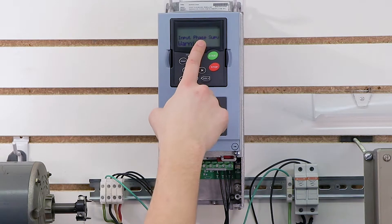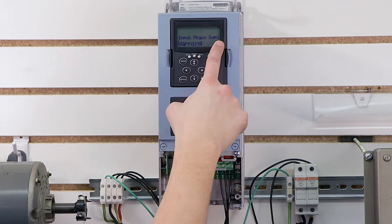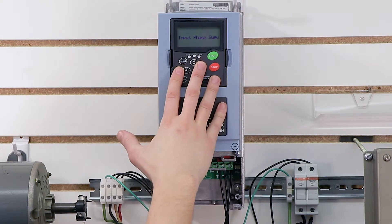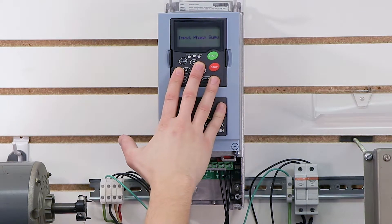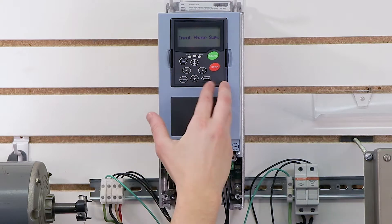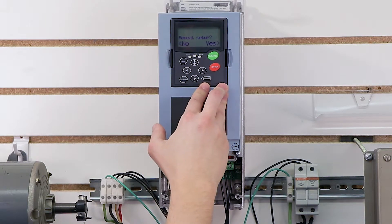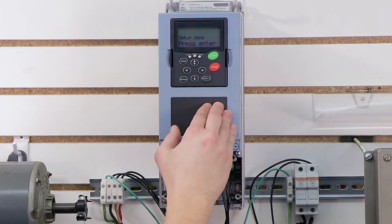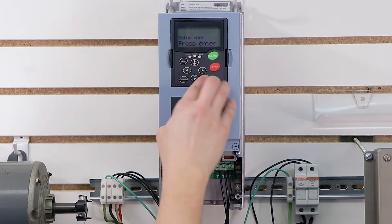Now I'm getting a warning that says input phase supervision. Now this is because if you watched my previous video, I'm actually running this drive on single phase input for this demo. When you have three phase coming in, you're not going to get this warning. I can actually turn that off later if I wish. Finally, it's asking me if I want to repeat my setup. I'm going to say no. And setup is done. Press enter.